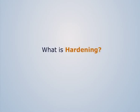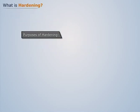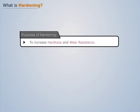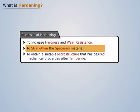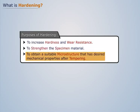What is hardening? The hardening process is performed to serve several purposes: to increase hardness and wear resistance, to strengthen the specimen material, and to obtain a suitable microstructure that has desired mechanical properties after tempering.